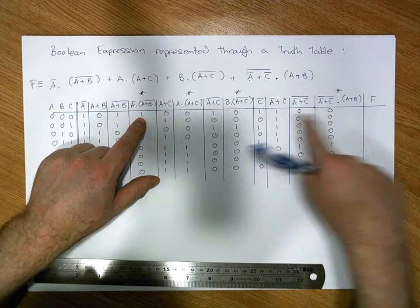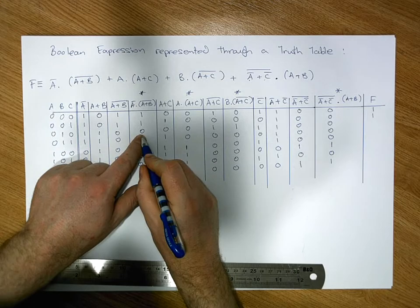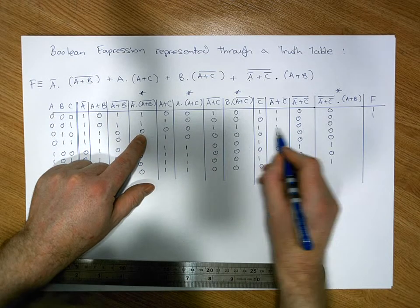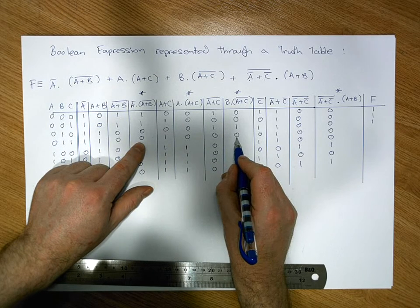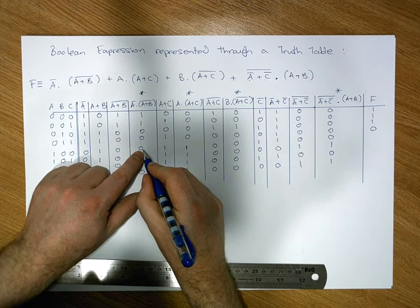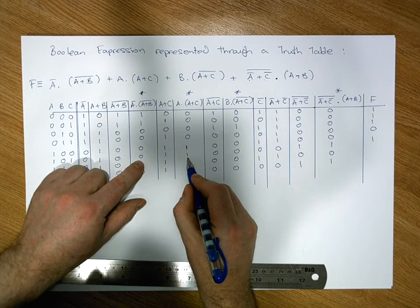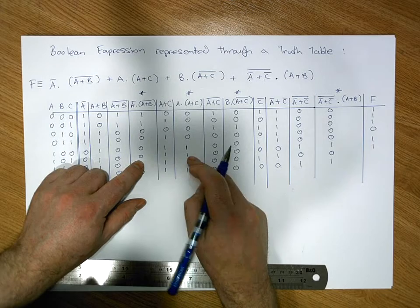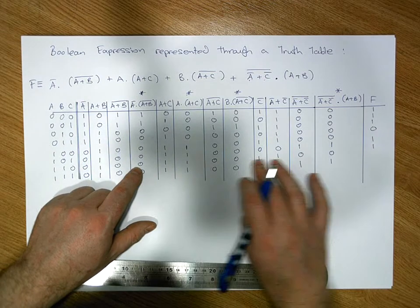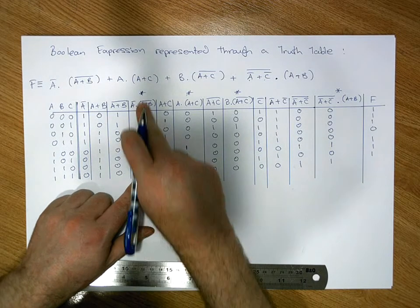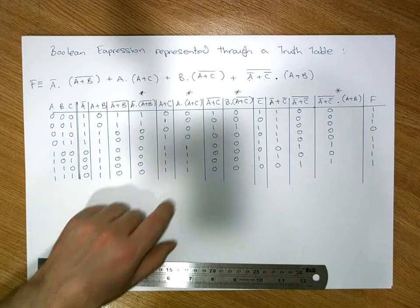An OR only gives zero when everything is zero. In the first row we have a one in term one, so F is one. In the second row we have a one, so F is one. In the third row a one from term three gives F equals one. In the fourth row all four terms are zero, so F is zero. From row five onward there are ones in the term columns, so F equals one for those rows. The last row also gives a one.